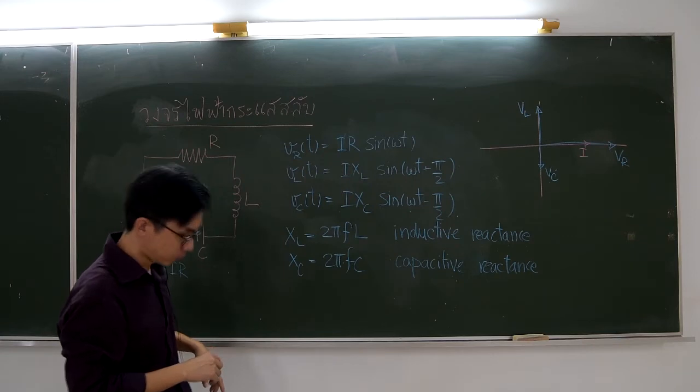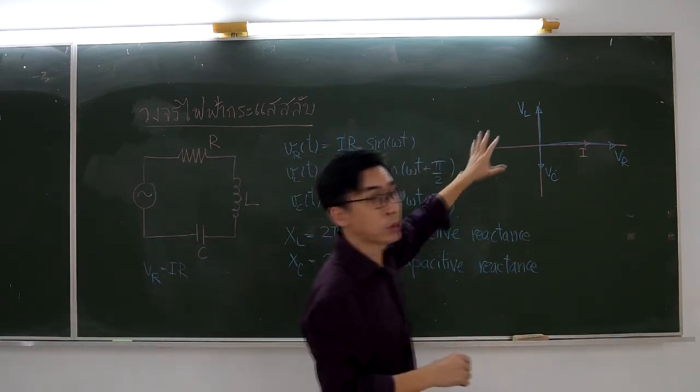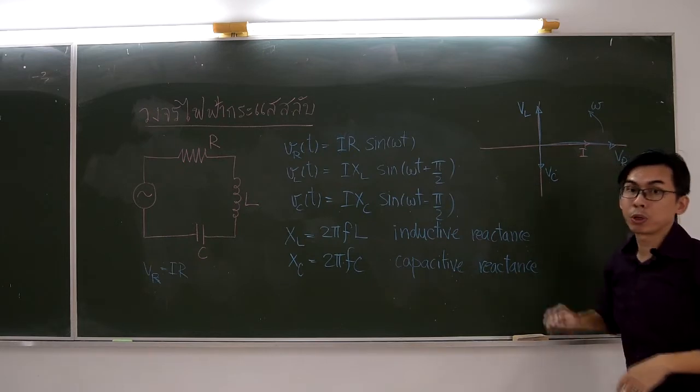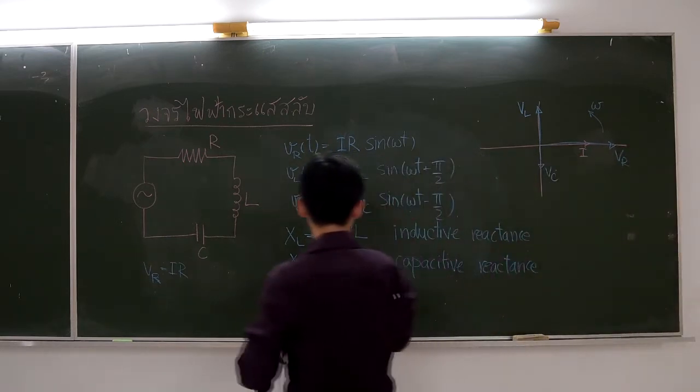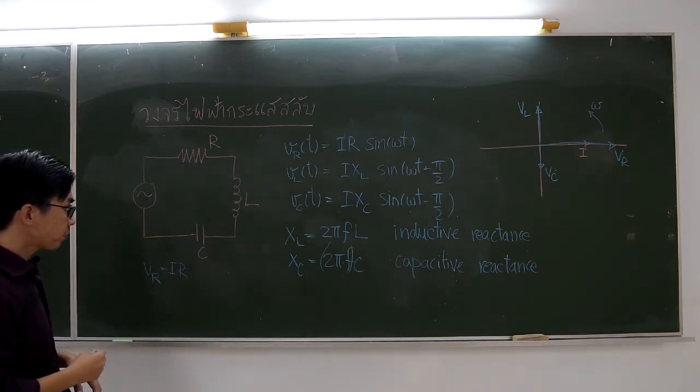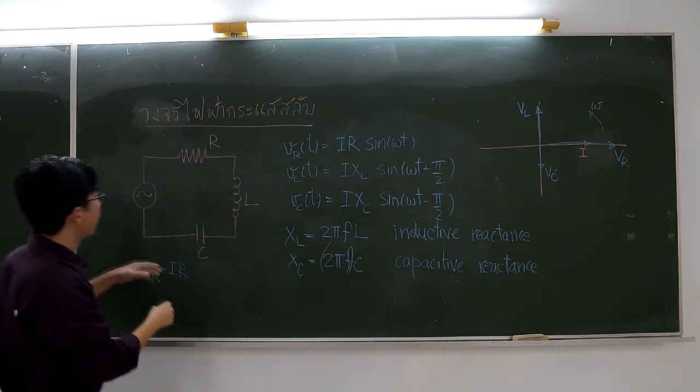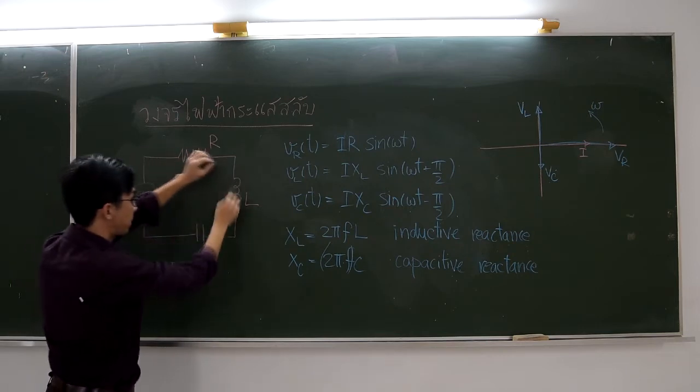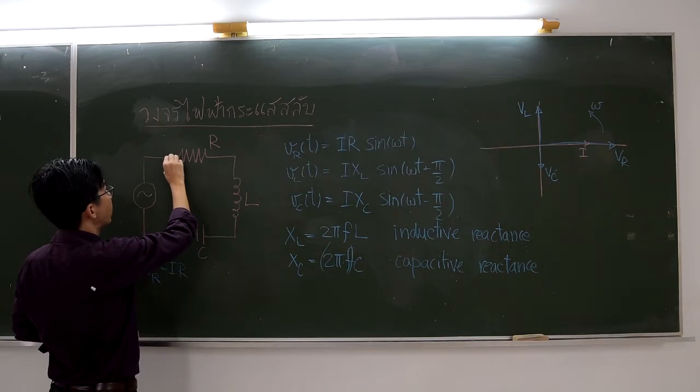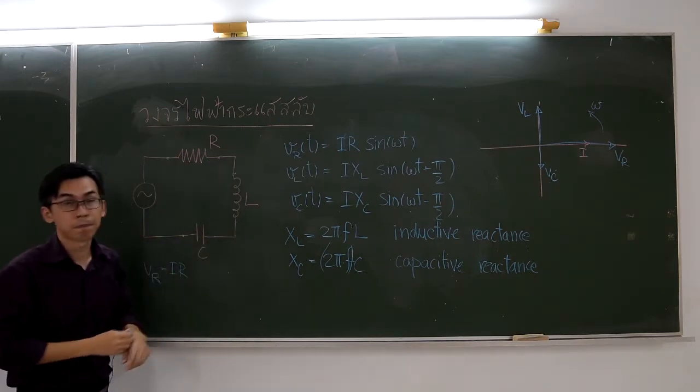Again, we need to resort to the phasor diagram. If we look at these functions, we will find that VL leads VR by 90 degrees, and VC lags VR by 90 degrees. The current is in phase with VR. These four vectors will rotate at the same angular speed, which is omega here.